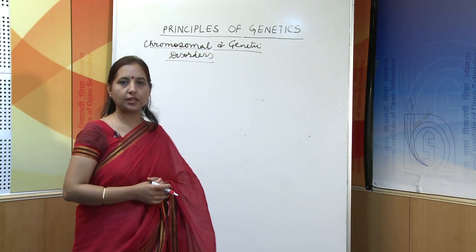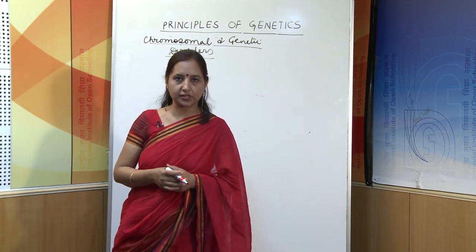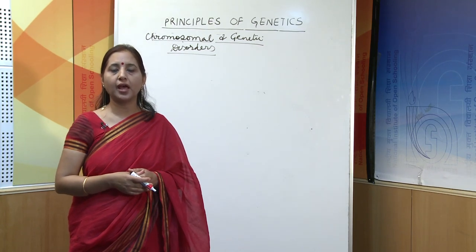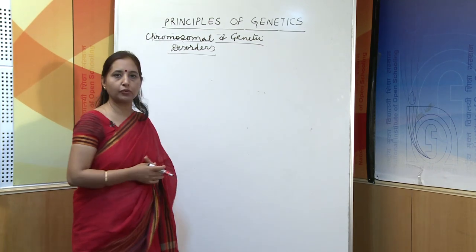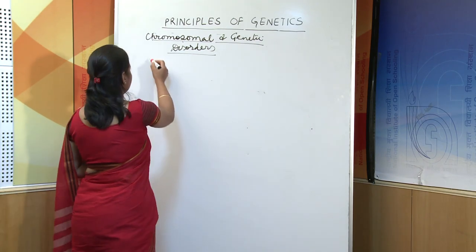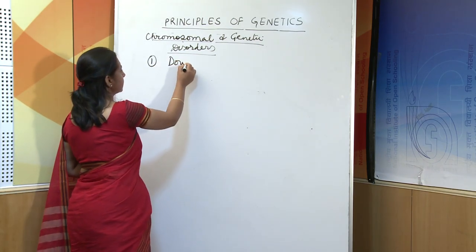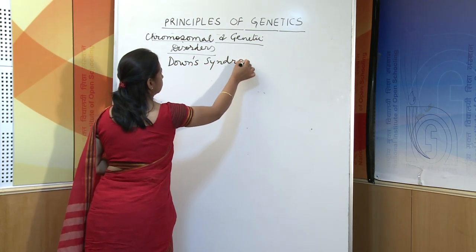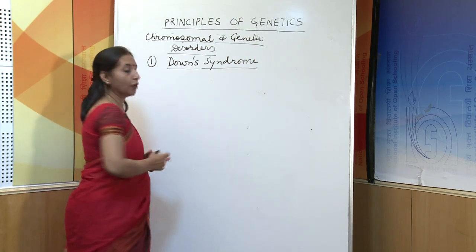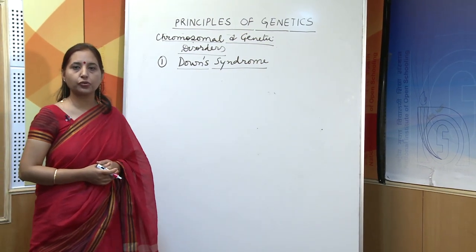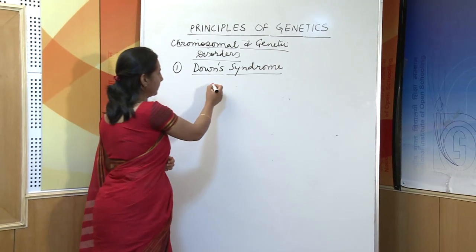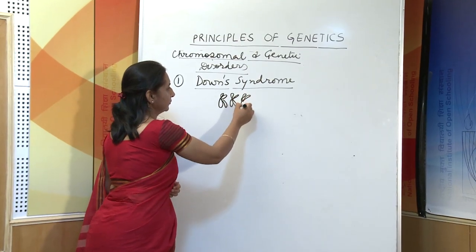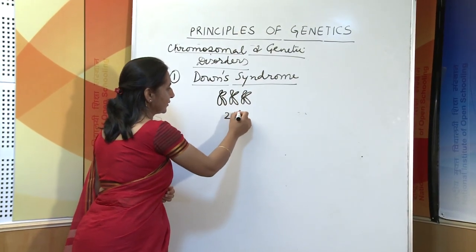If there is any change in the number or structure of chromosomes, it leads to various genetic disorders. The first disorder is Down syndrome. Down syndrome occurs due to trisomy of the 21st pair of chromosomes — that means instead of a pair, there is an extra chromosome in the 21st chromosome.